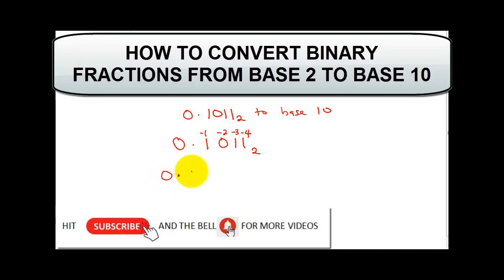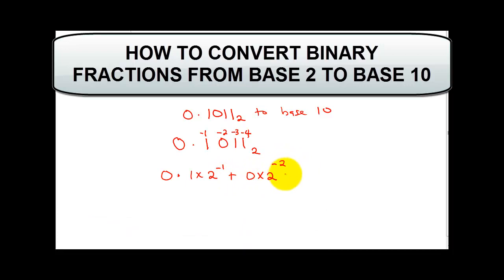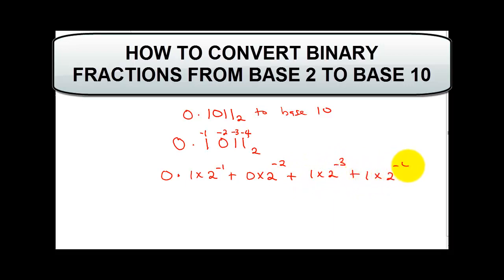So this is going to be: 0 point, then 1 times 2 raised to the power minus 1, plus 0 times 2 raised to the power minus 2, plus 1 times 2 raised to the power minus 3, plus 1 times 2 raised to the power minus 4.